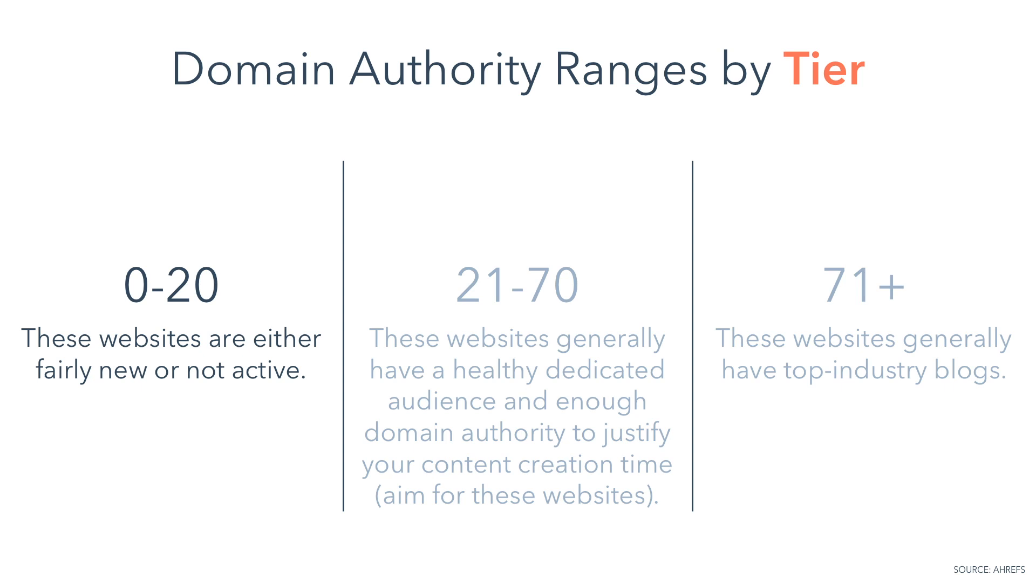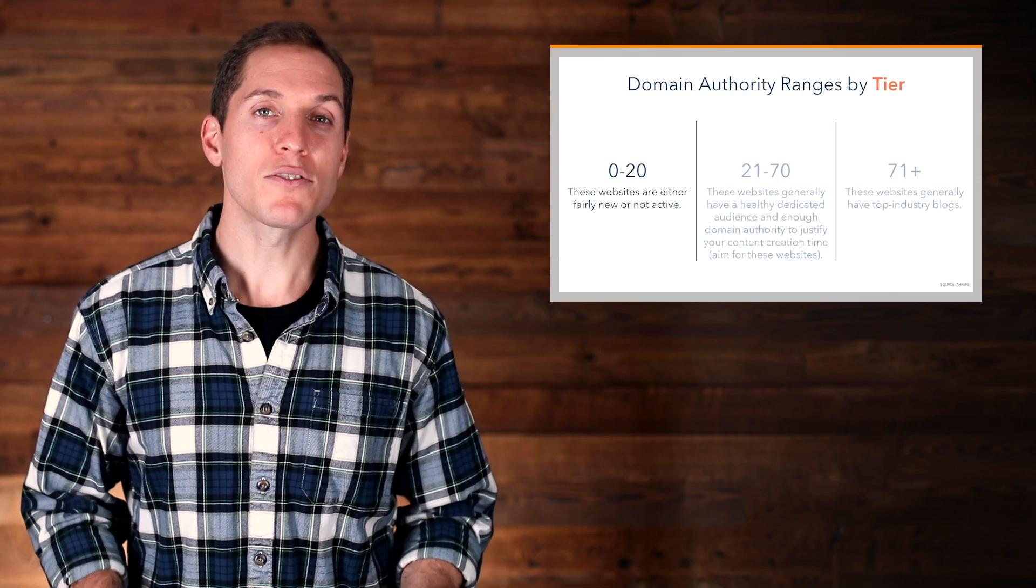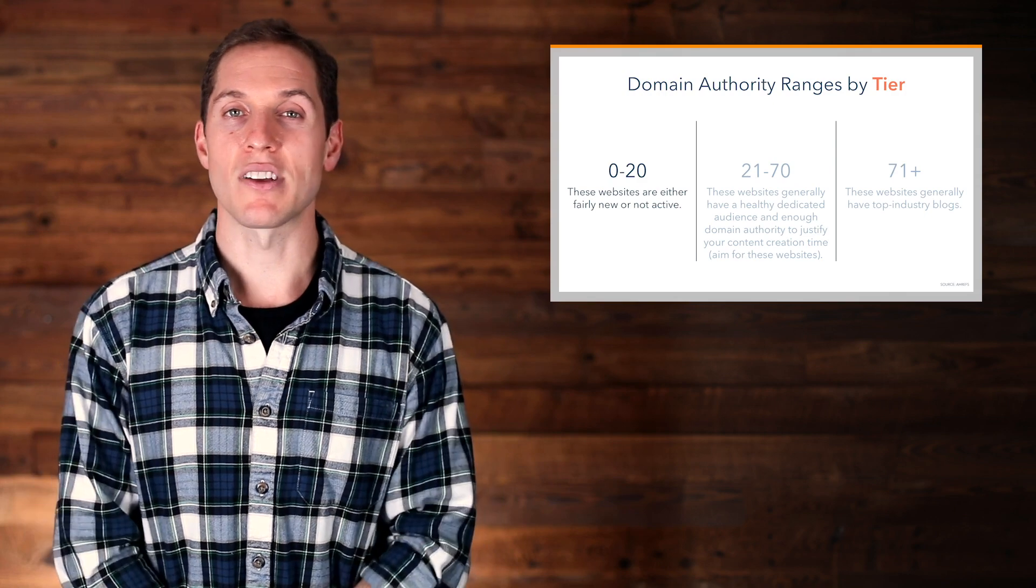Tier 1, a website with a domain authority between 0 to 20. These websites are either fairly new or are not active. Inbound links from these sites won't make that much of an SEO impact on your site.